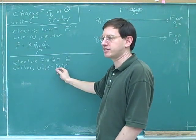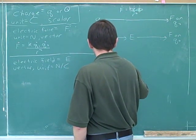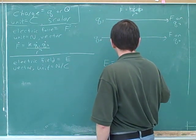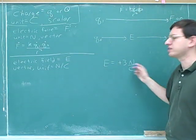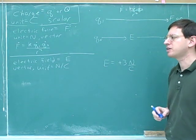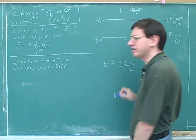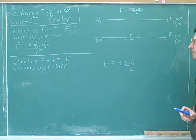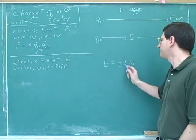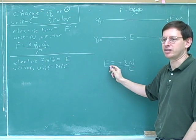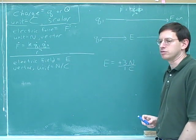Let's say we've got an electric field of positive three newtons per Coulomb. What does that mean? We learned how to interpret ratios of units by putting a one down in the denominator. This tells us that if we have a one-Coulomb test charge, it will feel a force of three newtons. That's the meaning of this electric field — a one-Coulomb test charge will feel a three-newton force.